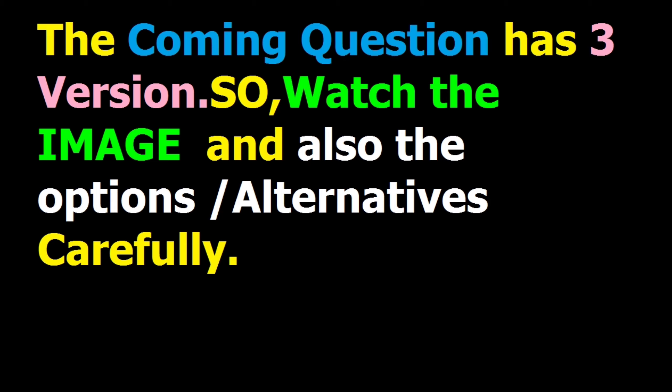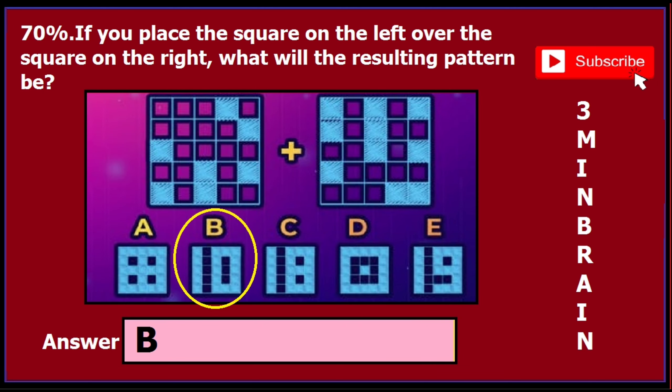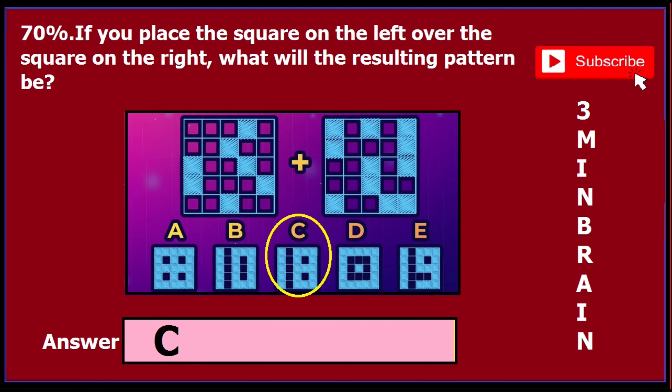So please watch the image very carefully — just like before, each version differs from each other in image. For instance, in version 1 of this question, if you find this sort of image you can see here, then your answer is B. In version 2 of this question, if you find this sort of image you can see here, then your answer is C. So please watch the image very carefully.